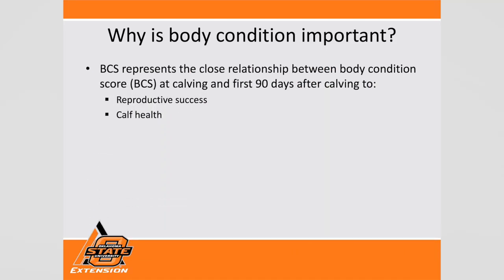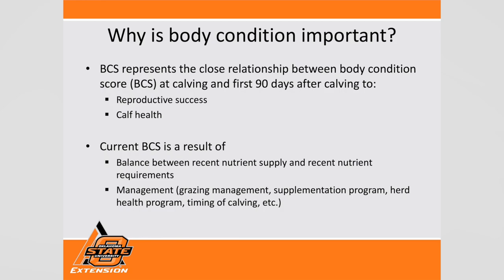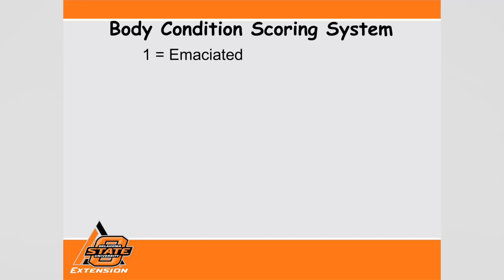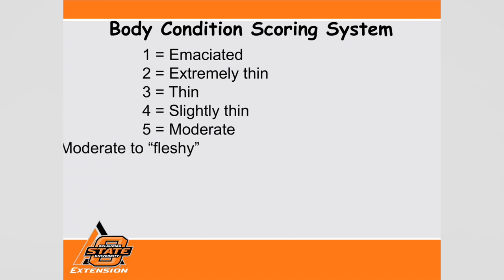What is required from the animal may be different than what food is available. We may have hay out there but if it's low in nutrients, they can eat all they want and they're not going to gain weight or appear healthy. Scores one through three are skinnier - the more bones or angularity we see, we know there's a problem. At four, five, and six, ribs are starting not to be seen, and the angularity of the hips, hooks, and pins are starting to be covered. The backbone is starting to be covered and we're getting a square hip because there's muscle tissue.